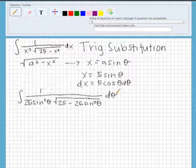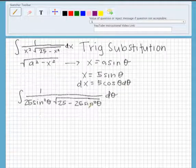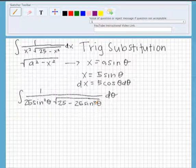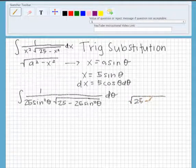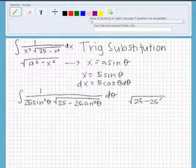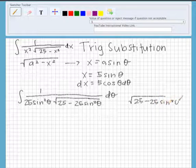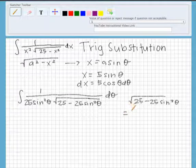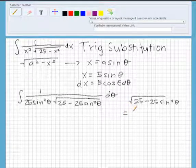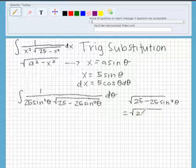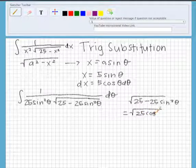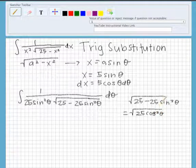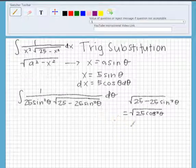So we know that 25 minus 25 sine squared theta, we can do the problem over here on the side. This turns into radical 25 cosine squared theta by using the trig identities and ends up being 5 cosine theta.